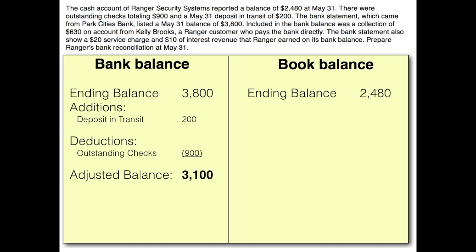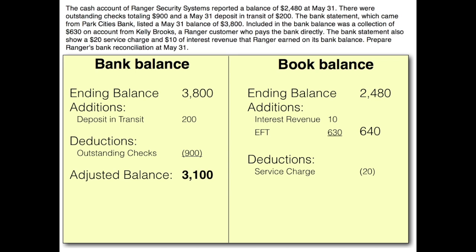The ending balance per the books was $2,480. Looking at additions — things the bank knows about that appear on the bank statement but not in our books — one is interest revenue of $10, and the other is the electronic transfer collected from Kelly Brooks of $630, which is the EFT payment. For deductions we have the service charge of $20. When we sum all those numbers up we end up with an adjusted balance of $3,100 — the same adjusted balance on both sides.